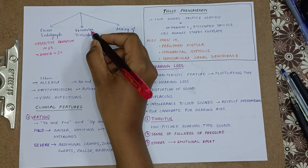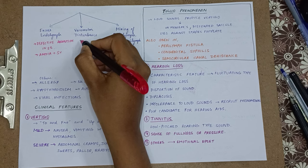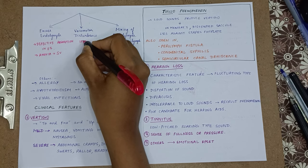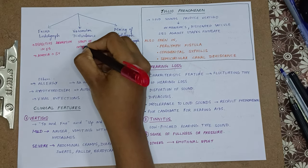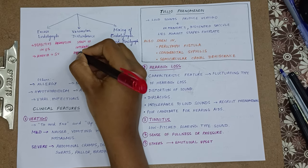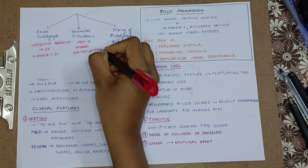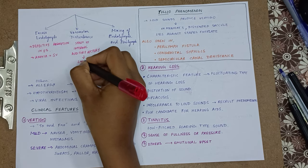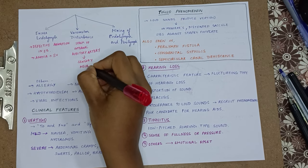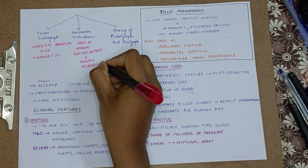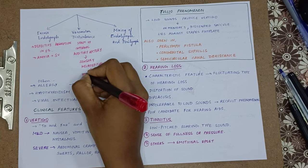The second mechanism is vasomotor disturbance. When there is stress, there is sympathetic overactivity resulting in spasm of the internal auditory artery, which results in disturbance in function of the sensory neuroepithelium, hence causing deafness and vertigo.